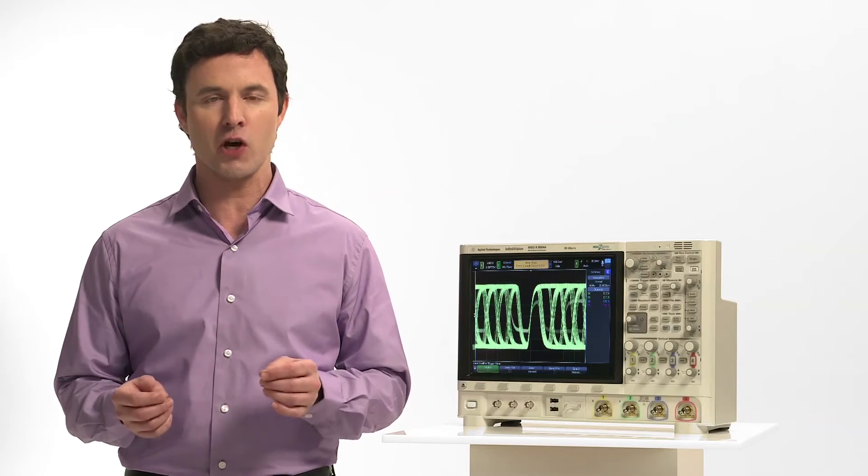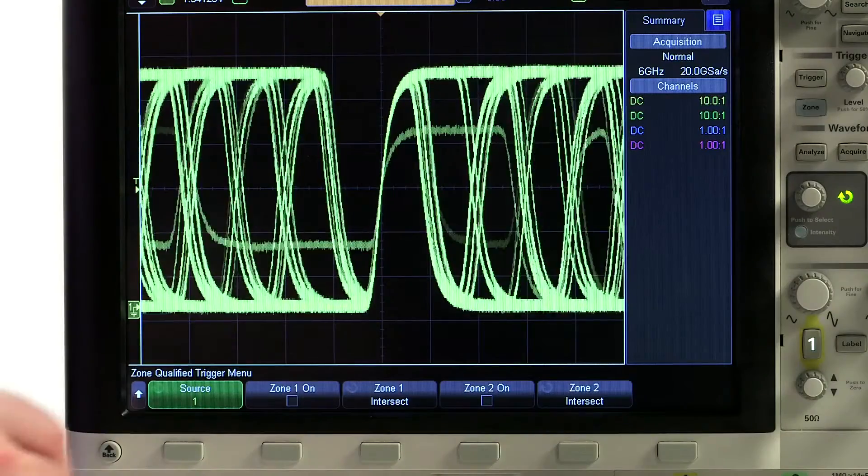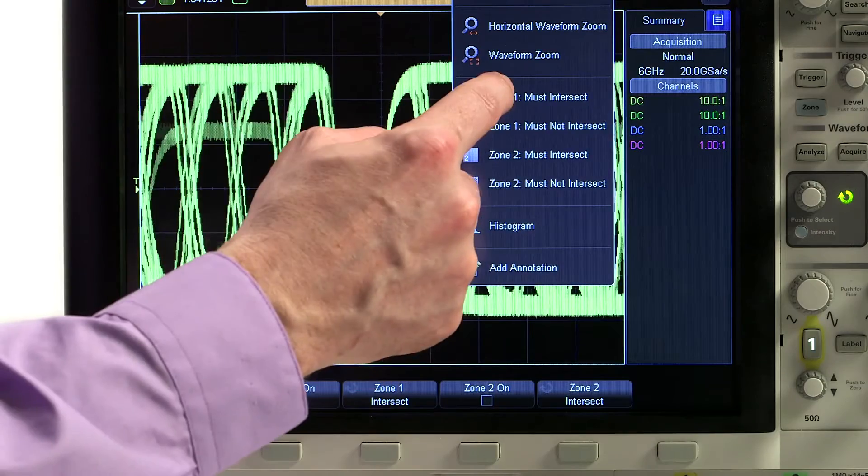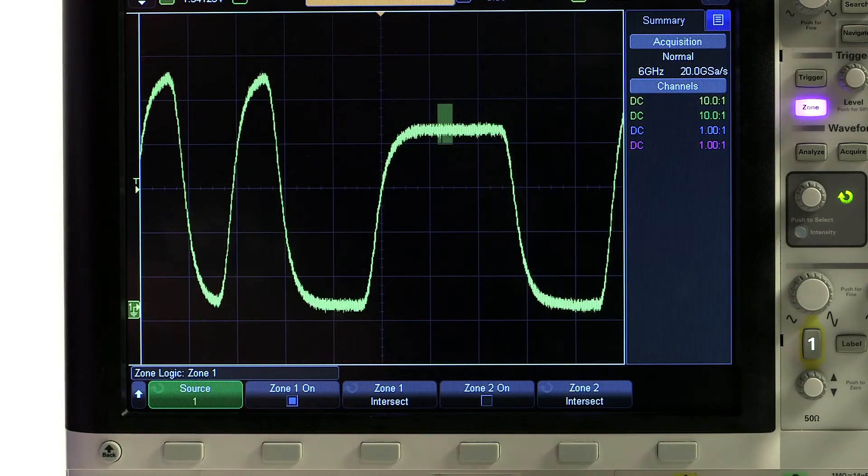And using the InfiniScan zone touch trigger, if you can see it, you can trigger on it. Even complex triggering is now as easy as finding a signal of interest on the screen and drawing a zone box the signal either must pass through or not intersect.